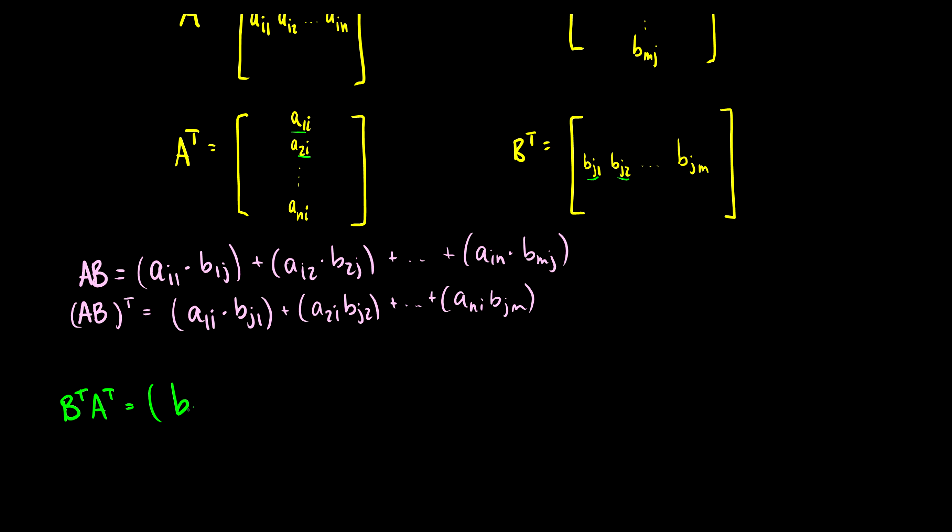So this is going to be B_j1 times A_1i plus B_j2 times A_2i, and this goes on all the way up to B_jm times A_ni.